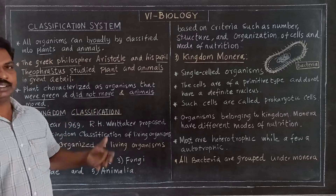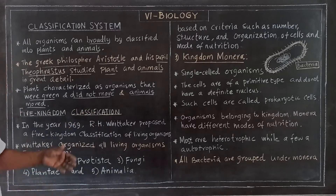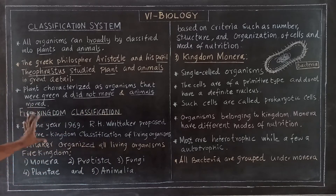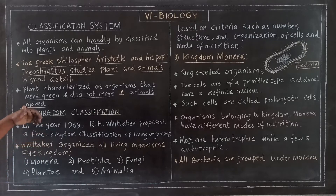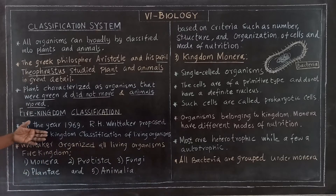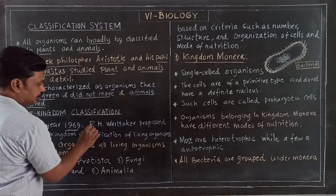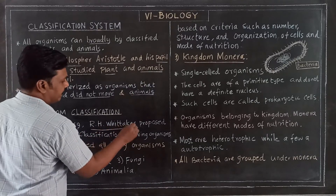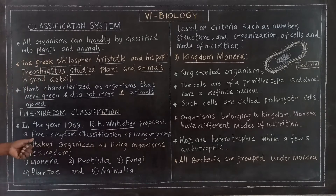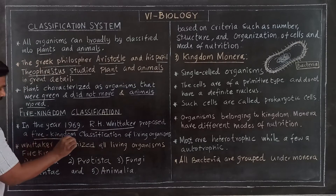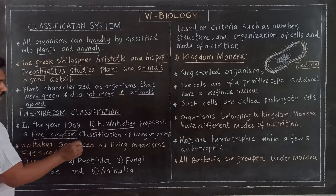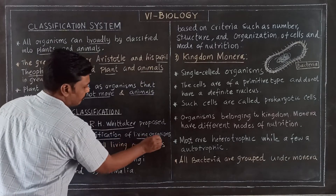Five kingdom classification. Classification is one of the major five portions. In the year 1969, R.H. Whittaker proposed the five kingdom classification system for living organisms.